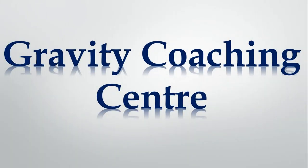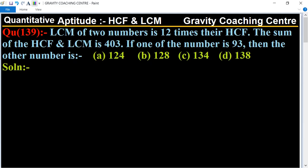Welcome to our channel Gravity Coaching Center. Quantitative Aptitude chapter HCF and LCM, question number 139. The LCM of two numbers is 12 times their HCF. The sum of the HCF and LCM is 403. If one of the numbers is 93, then the other number is what?